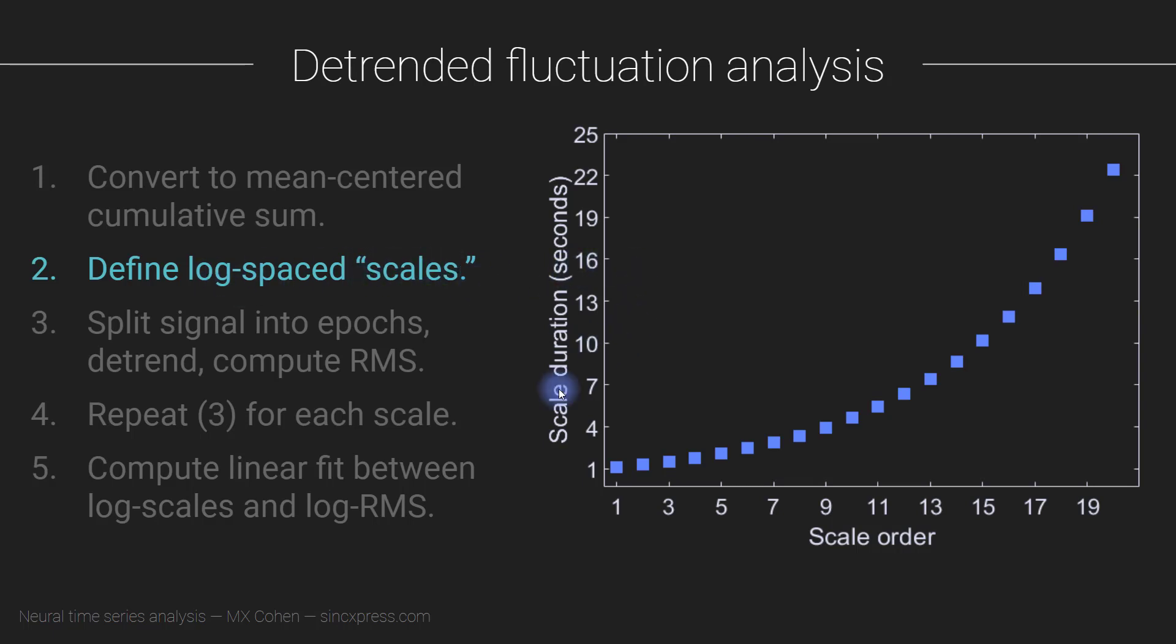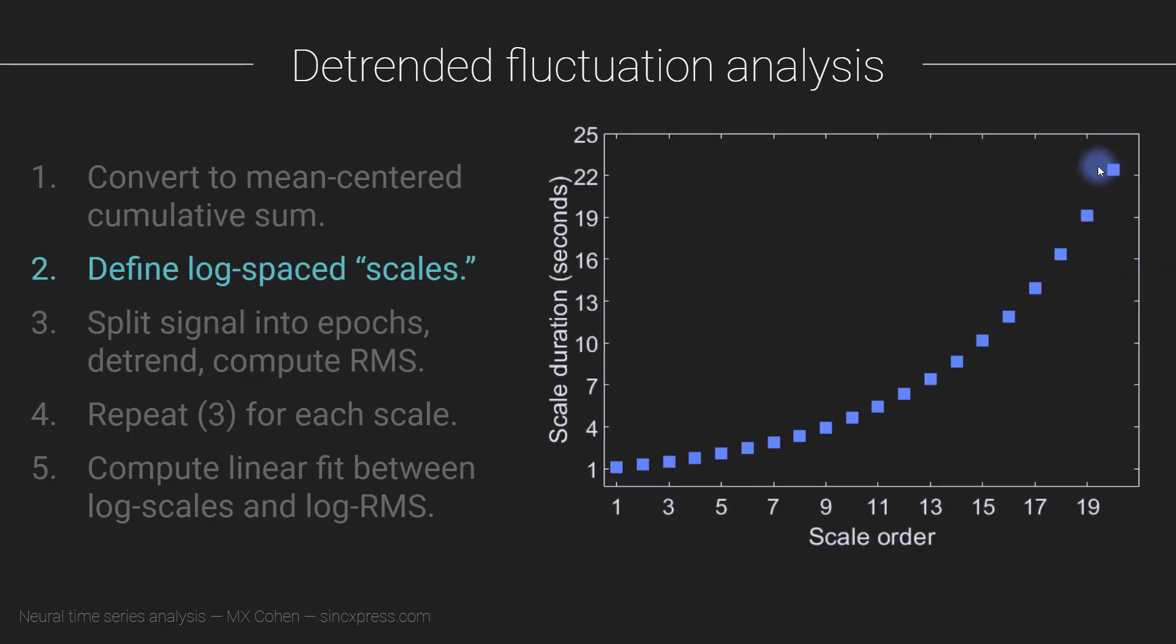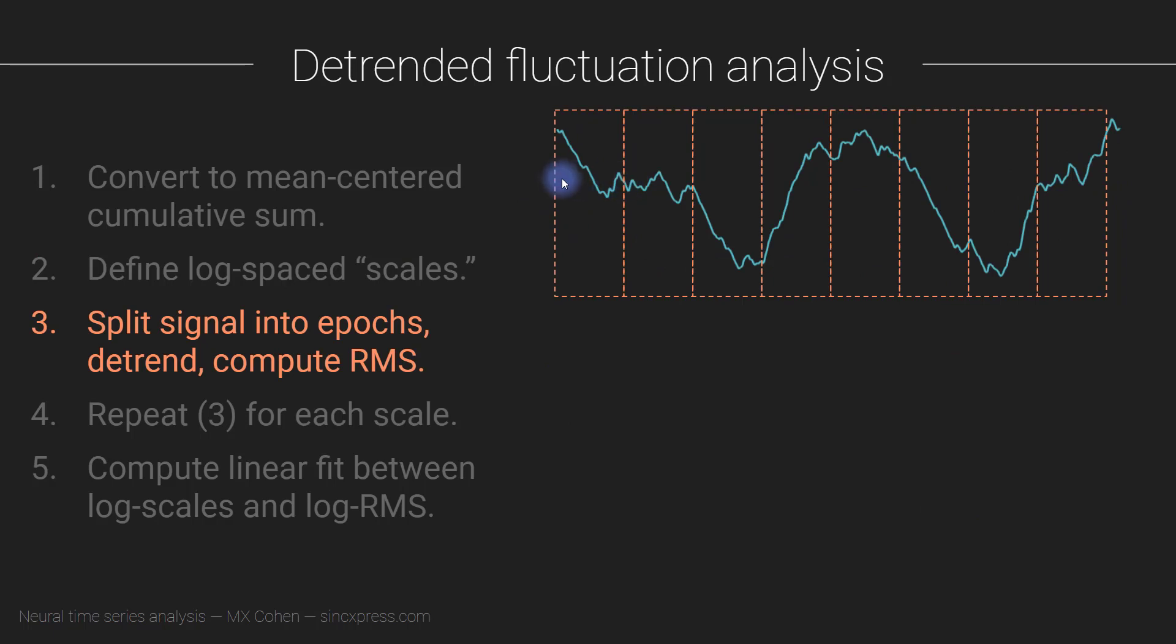Okay, so now we have step two. We have all of these scales, 20 scales ranging from one second to 23 seconds or whatever. And then what you do with these scales is you use them to cut the data into epochs. So we have this really long time series, let's say this is 10 minutes long or something. And then what we do is epoch the data, so we segment the data according to these different scales. So the longest scale that I showed here was 23 seconds, so each one of these windows might be 23 seconds. Sometimes you get a little bit at the end here, some little bit that doesn't fit into one of these segments, which is fine. It's generally just a small amount of data.